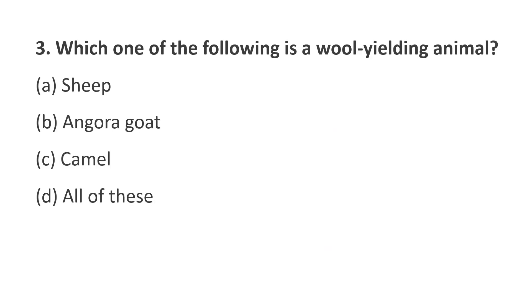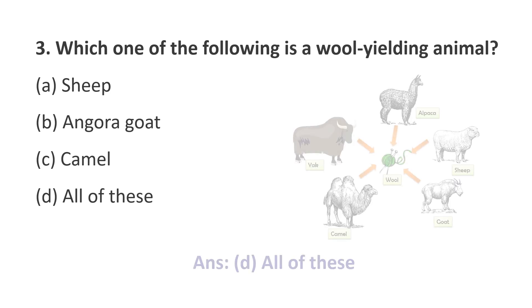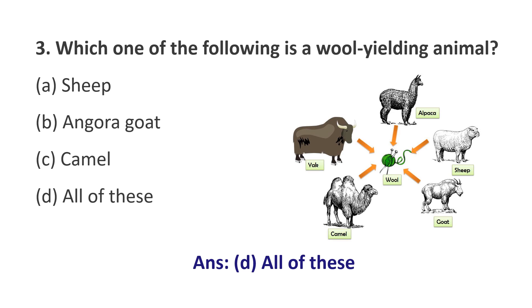Question number 3. Which one of the following is a wool-yielding animal? Option A, Sheep; Option B, Angora goat; Option C, Camel; Option D, All of these. The answer is Option D, All of these. Sheep, goat, and camel — all these animals are wool-yielding animals.